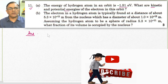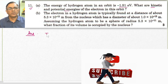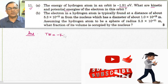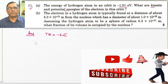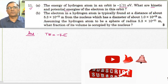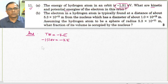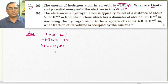The standard relation is: total energy equals minus of kinetic energy. Since total energy is minus 1.51 electron volts, the value of kinetic energy should be plus 1.51 electron volts.